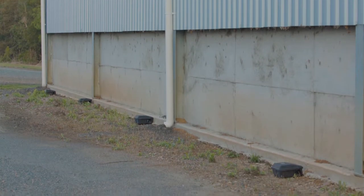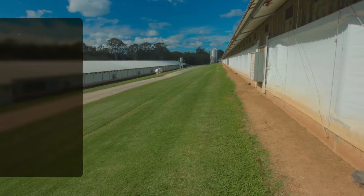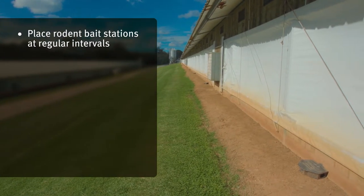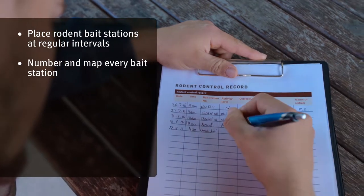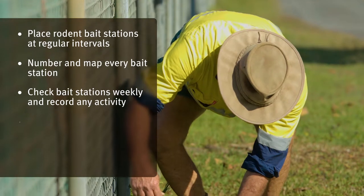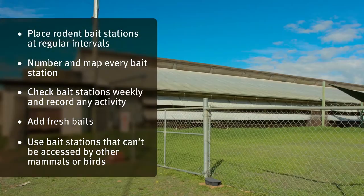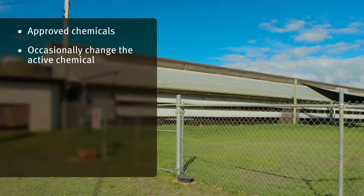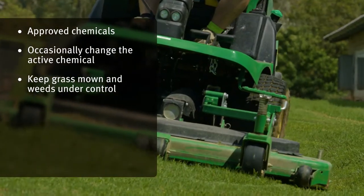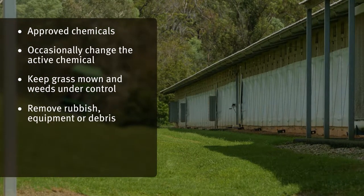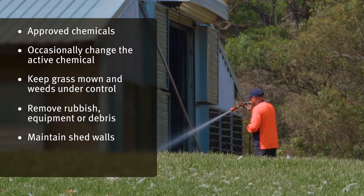Rodents, vermin and insects can carry and spread disease and food safety pathogens. A vermin control plan must be implemented. Place rodent bait stations at regular intervals around the sheds and other strategic locations such as outside range boundaries. Number and map every bait station. Check bait stations weekly and record any activity. Add fresh baits as required. Use bait stations that can't be accessed by other mammals or birds, and only use baits that contain approved chemicals, occasionally changing the active chemical to maintain effectiveness. Keep grass mown and weeds under control in the production area. Remove rubbish, equipment or debris away from the sheds as it can act as a rodent haven. Maintain shed walls to restrict the entry of rodents and other vermin. Control insects with approved chemicals.